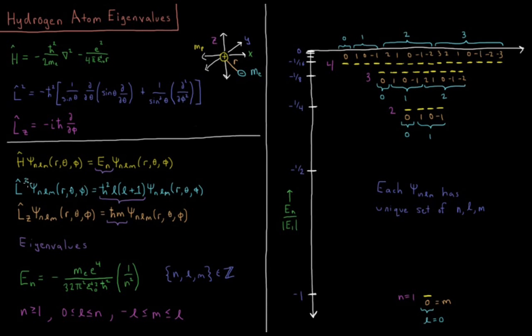For L squared, the L squared operator acting on psi, or hydrogen atomic orbitals, behaves exactly like the rigid rotor wave functions did, because the angular part of these wave functions are the same as they were for the rigid rotor. The angular part, the theta phi part, are the spherical harmonic functions. So L squared acting on psi n, l, m gives us an eigenvalue of h-bar squared l times l plus 1. So this is our total angular momentum squared.